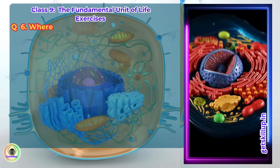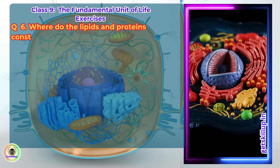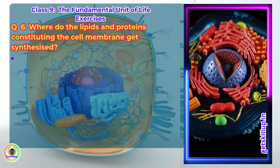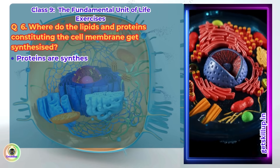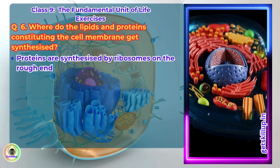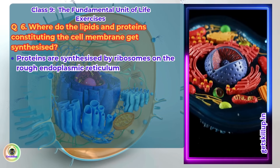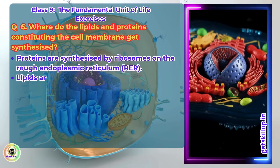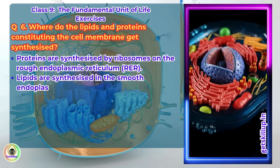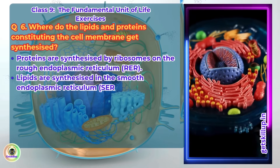Q6. Where do the lipids and proteins constituting the cell membrane get synthesized? Proteins are synthesized by ribosomes on the rough endoplasmic reticulum. Lipids are synthesized in the smooth endoplasmic reticulum.